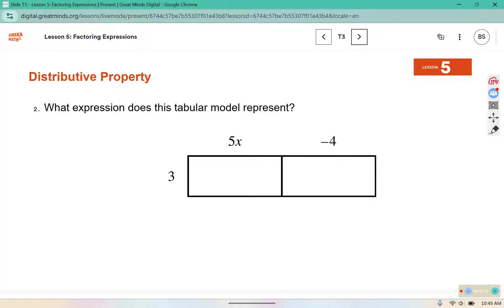What expression does the tabular model represent? As it is written, this represents three sets of 5x minus 4. We have the 3 over here on the left, so it's the one on the outside of the parentheses, and then we have the 5x minus 4 on the top, so that piece is in the parentheses.